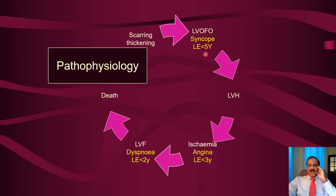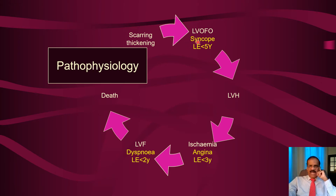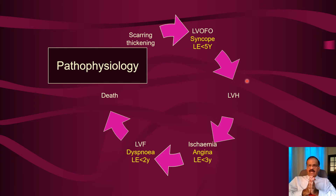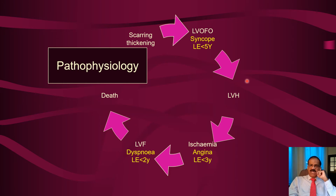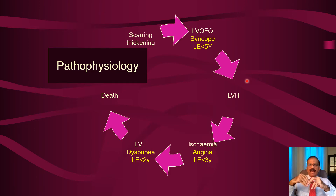Syncope in aortic stenosis has prognostic value: the average life expectancy at this stage is five years. Five years is a short duration, so action should be taken promptly. At this stage there is left ventricular hypertrophy — and unlike mitral regurgitation where the left ventricle dilates, here it is concentric hypertrophy.